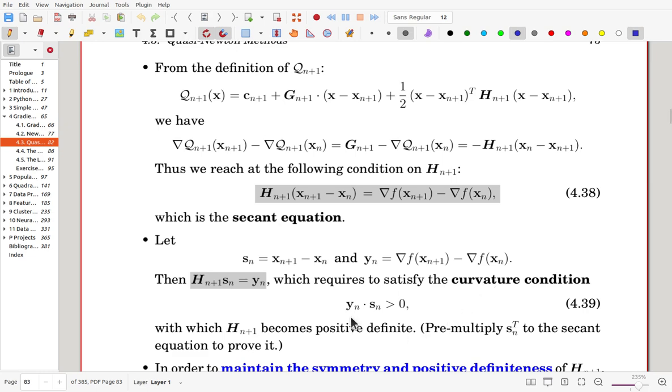Now here, yn dot Sn is positive, with which Hn+1 becomes positive definite. You can easily check that if you multiply Sn transpose on the left hand side over there, that is same as Sn yn dot product. Now that is required condition, curvature condition, so that here it is imposing positive definiteness of Hn+1.